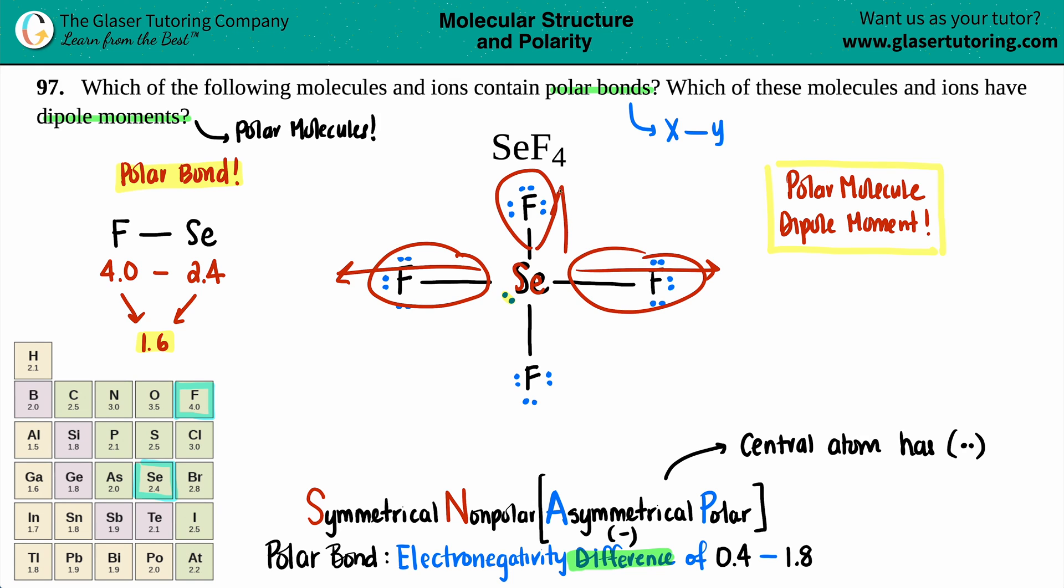This bond to fluorine going to the left cancels out with this bond to fluorine going to the right. This fluorine bond up top cancels out with this fluorine bond going on the bottom. Nothing's cancelling out the two electrons. So there you go. I hope this helped. Let me know in the comments. Thank you for viewing the video.